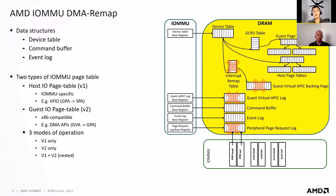Another good example of data structures includes command buffer and event logs, which are used for communication between software and hardware. The management of those data structures requires head and tail registers, also defined as MMIO registers. AMD IOMMU actually supports two types of IOMMU page table.